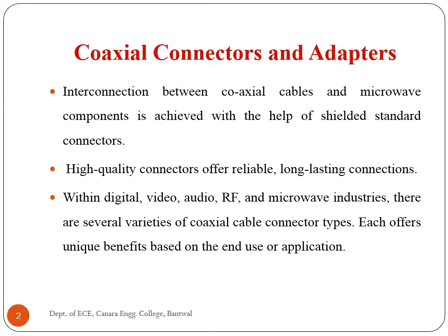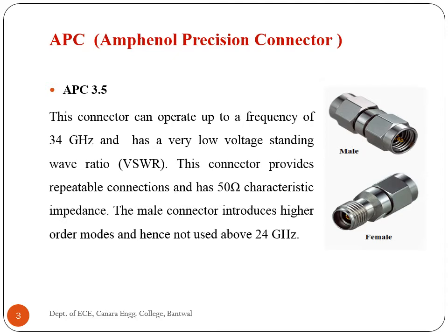Several types of coaxial connectors have been developed. The Amphenol Precision Connector APC 3.5 can operate up to a frequency of 34 gigahertz and has a very low voltage standing wave ratio. This connector provides repeatable connections and has 50 ohm characteristic impedance. The male connector introduces higher order modes and is not used above 24 gigahertz. The 3.5 millimeter interface offers better mechanical tolerances, stability, temperature performance, SWR, repeatability, loss, and wear. These connectors are manufactured in male or female gender with 50 ohm impedance and are available in bulkhead or no-mount options with clamp or solder attachment methods.